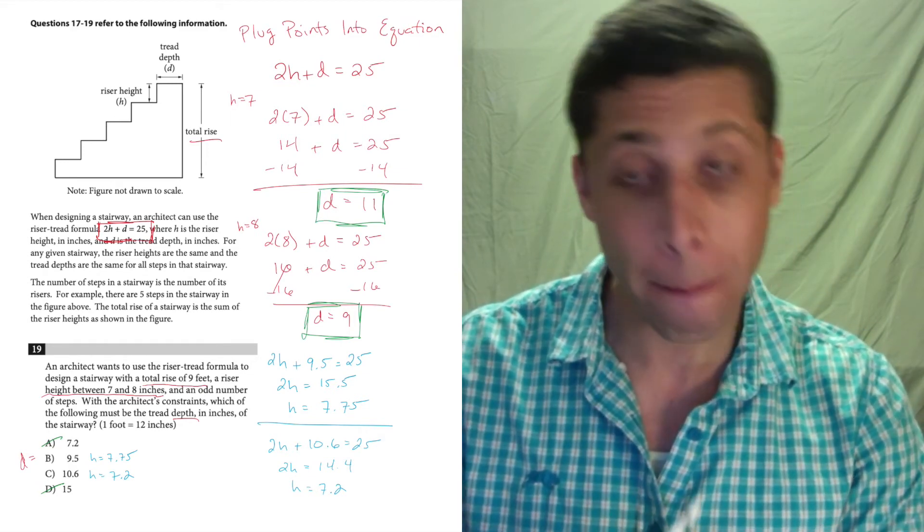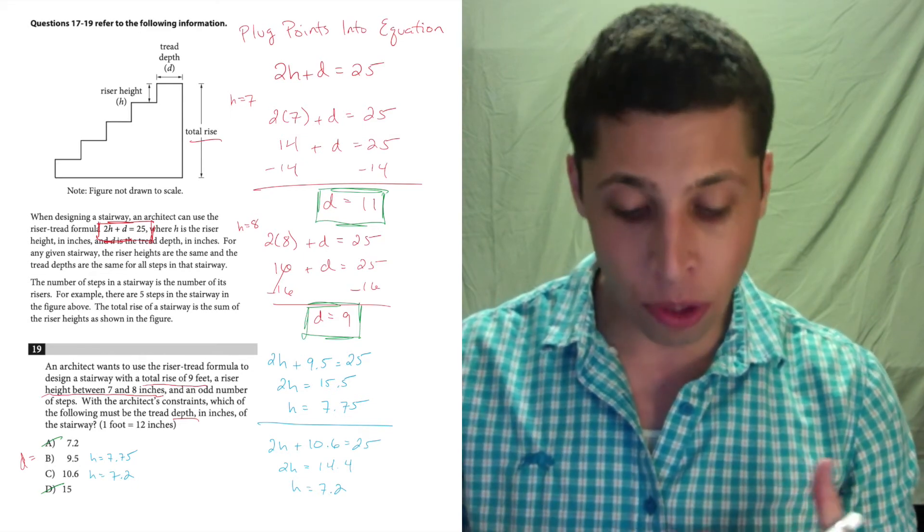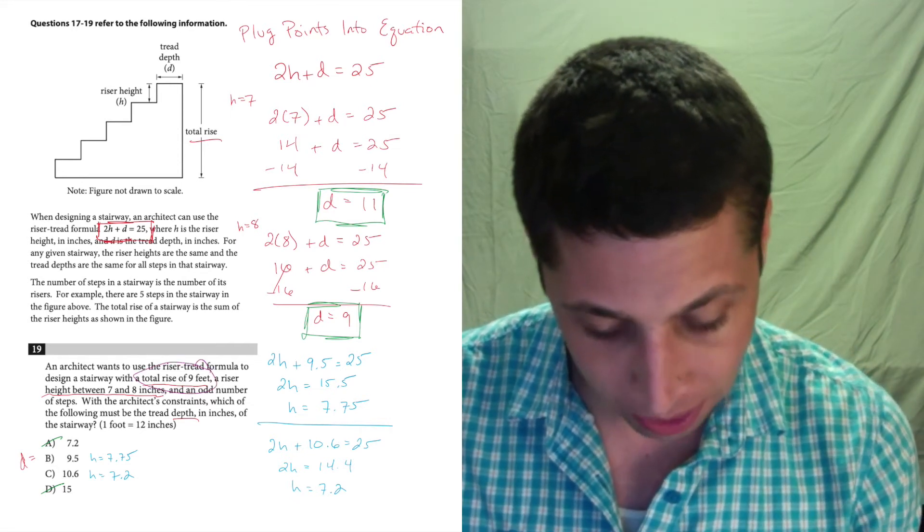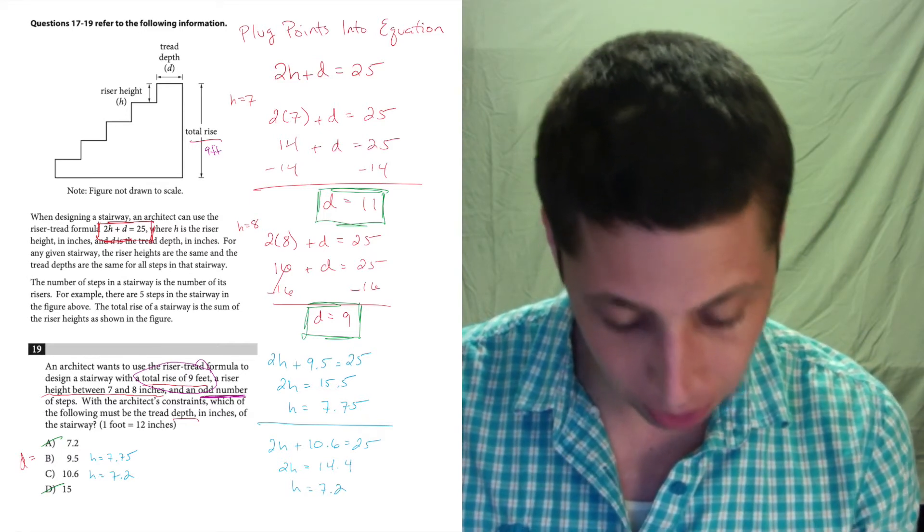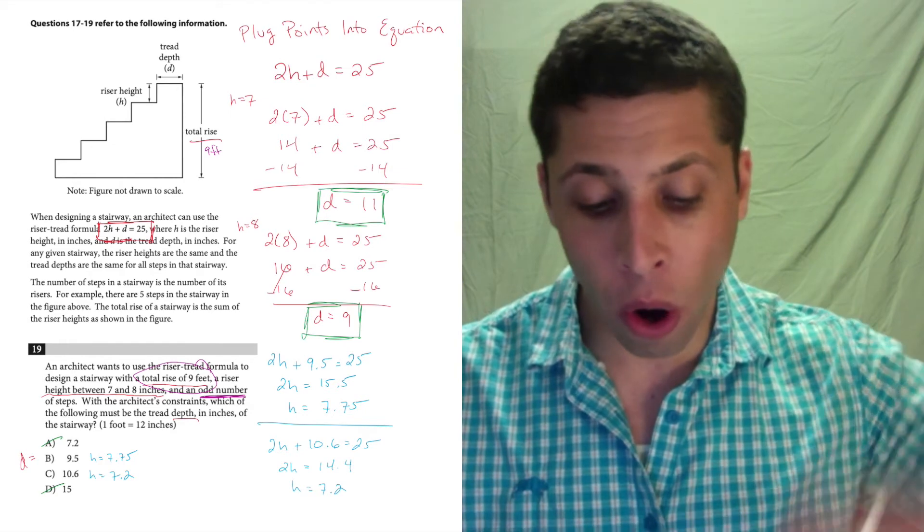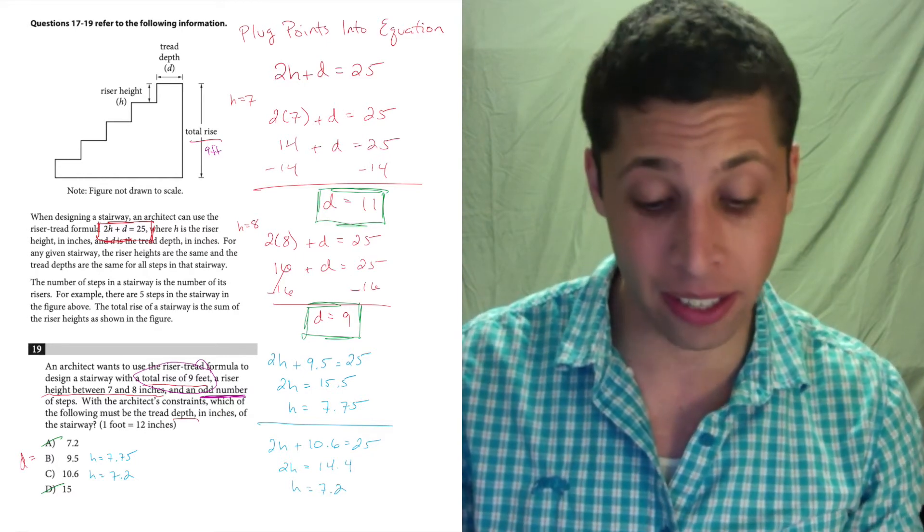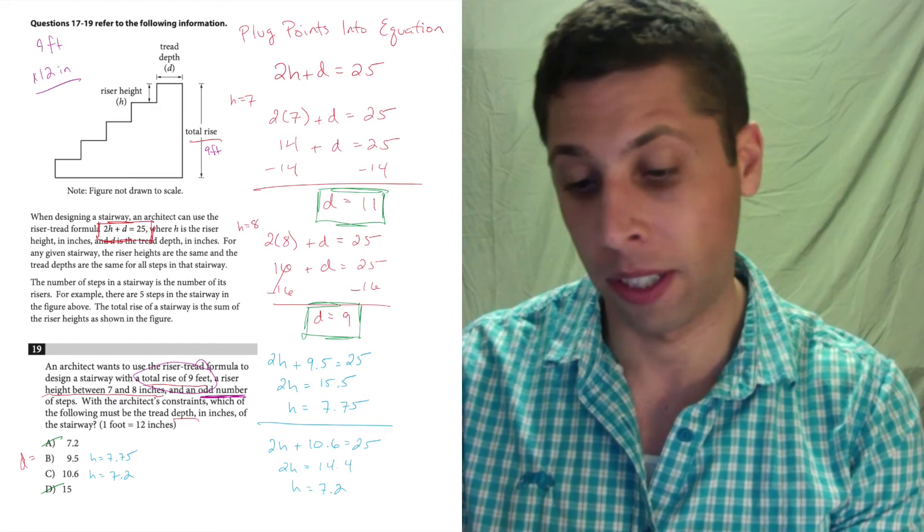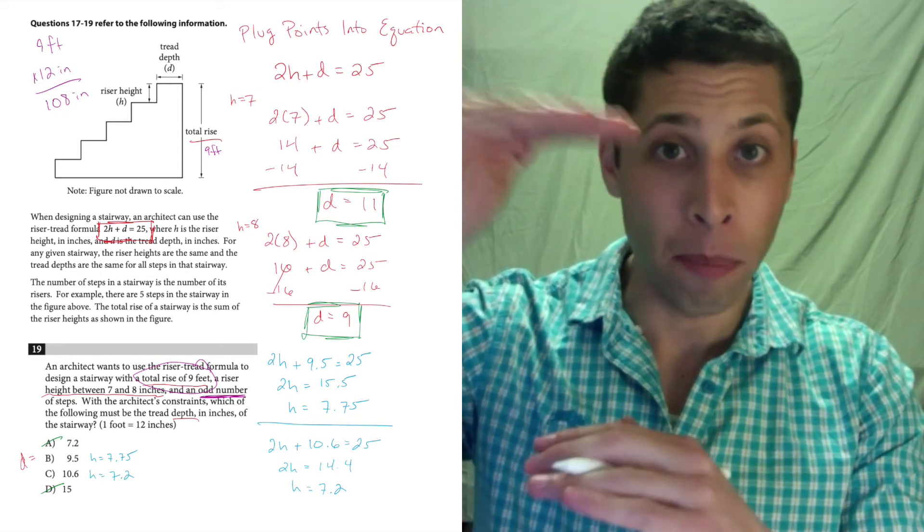Now you might be a little stuck, but one thing you can do is you can always say the SAT is not going to give me information that I don't use. So you can go through this question again and be like, what didn't I use? We ignored this piece here about the total rise of 9 feet. We also ignored another piece of information, which is that there must be an odd number of steps. Let's look at what the total rise is in the diagram. It's all of the heights added together. Let's convert 9 feet into inches. So 9 feet times 12 inches per foot, 9 times 12 is 108, so that's 108 inches.